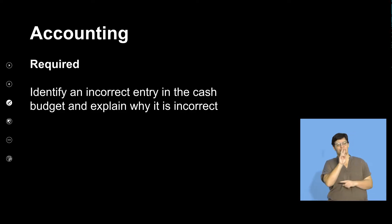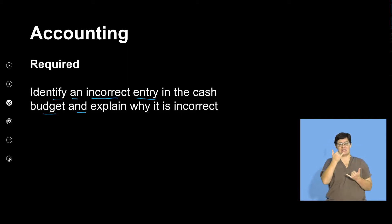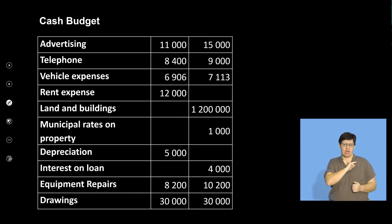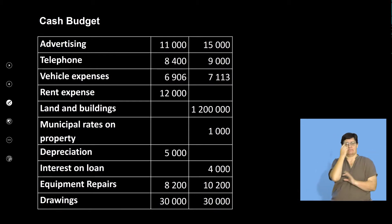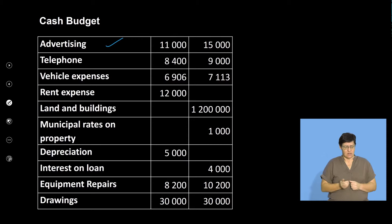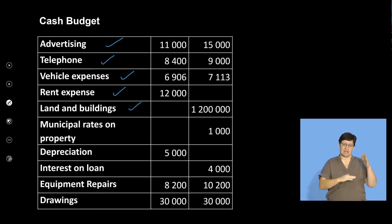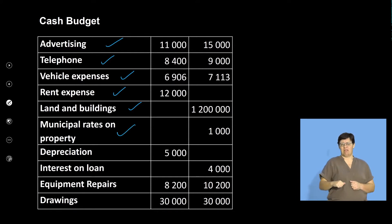Now we're looking at a cash budget where the question asks: identify an incorrect entry and explain why it is incorrect. Let's go through all the items. Advertising — certainly an expense, goes into the cash budget. Telephone — another expense, definitely in the cash budget. Vehicle expenses — yes, definitely. Rent expense, land and buildings — if buying land and buildings, the purchase is recorded in the cash budget. Municipal rates — yes, definitely.